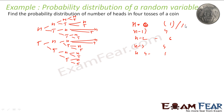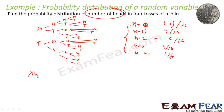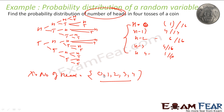The probabilities will be 1 by 16, 4 by 16, 6 by 16, 4 by 16, and 1 by 16. You try to solve it — it is not that difficult. Since you are looking for the number of heads, x is nothing but the number of heads, and x can take values 0, 1, 2, 3, 4. So you find probability of x equal to 0, 1, 2, 3, 4 and you will find these values.